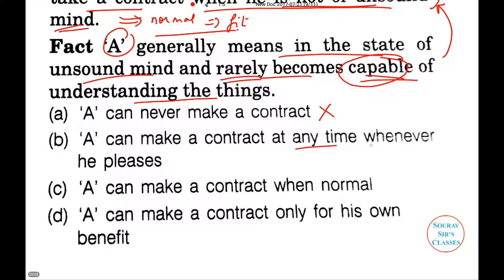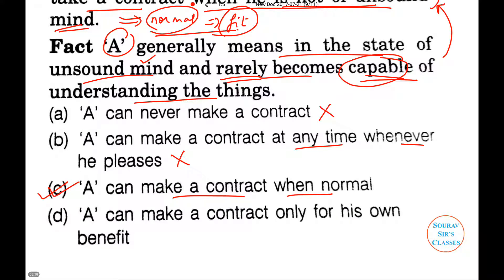A can make a contract at any time when he pleases — no, because he is not normal at all times. Most of the time he is of unsound mind. A can make a contract when normal — this is absolutely correct. Given the principle, he can make a contract when he is normal and his brain is functioning the same way a normal person's does. A can make a contract only for his own benefit — this is absolutely wrong. So given the principle, C is the correct option.